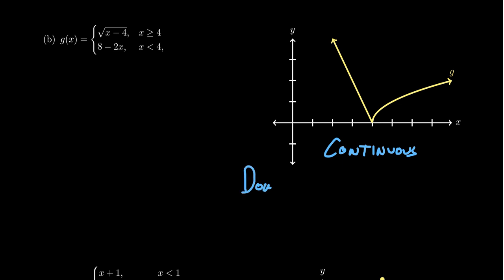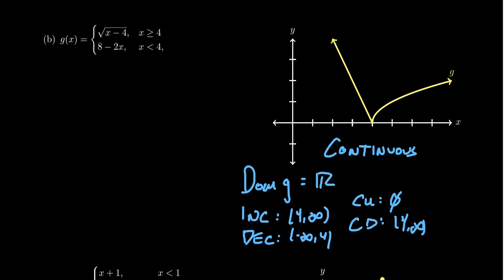Continuous is to suggest that we could draw this picture with one continuous stroke of our pen without ever having to pick it up to draw the picture. That's what a continuous graph is. Its domain is going to be all real numbers. This thing is defined for all real numbers, no exceptions to that. It's increasing on the interval of 4 to infinity, and it's decreasing on the interval from negative infinity to 4.